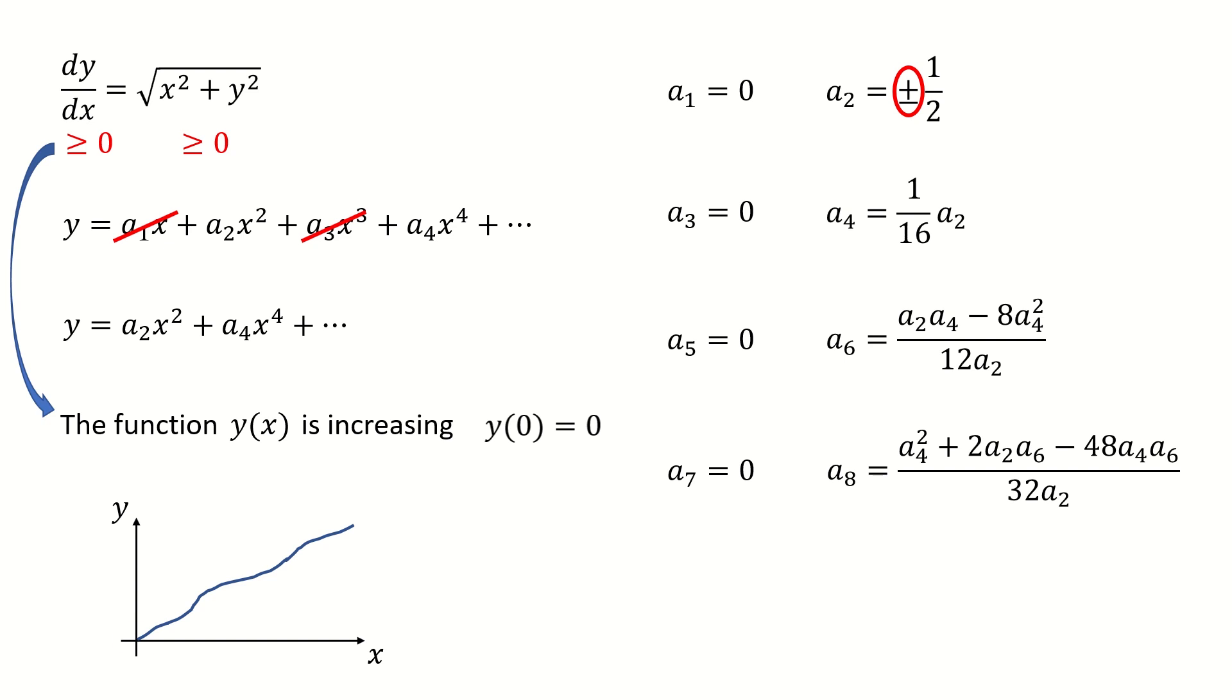But if we look at the neighborhood of x equal to 0, for example, when x equal to 0.0001, then the first term, a2 times x square, will be the dominant term. So it must be positive. So a2 must be equal to the positive 1 half.